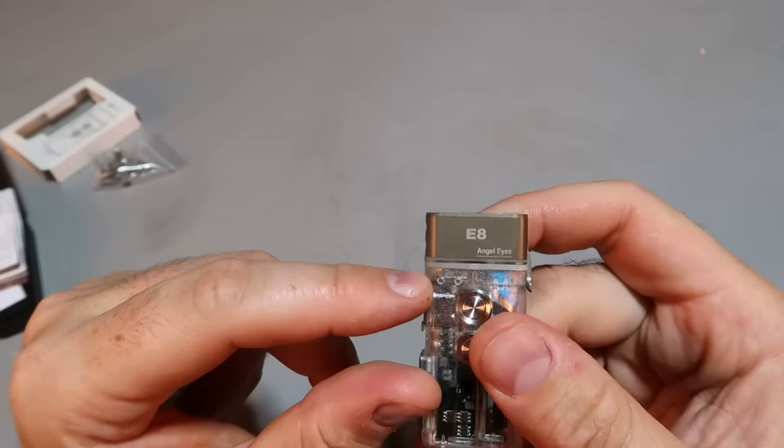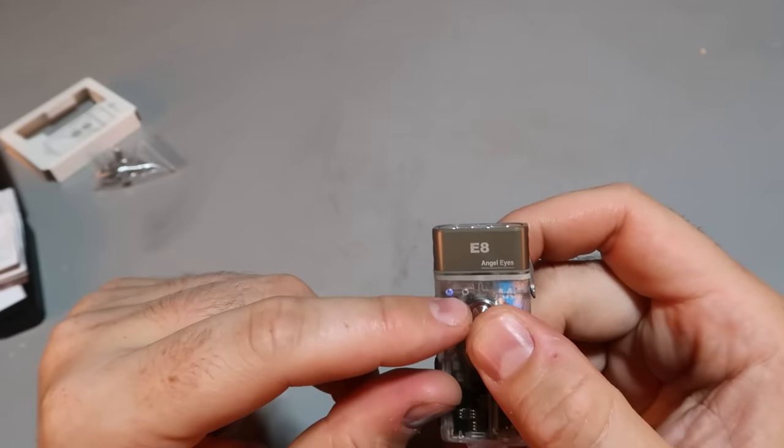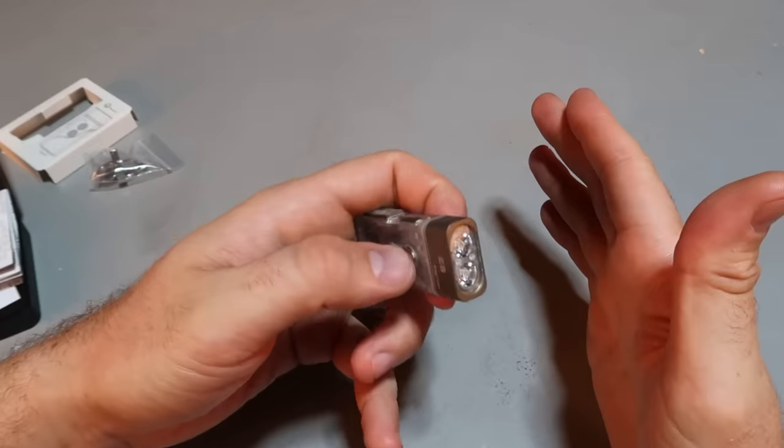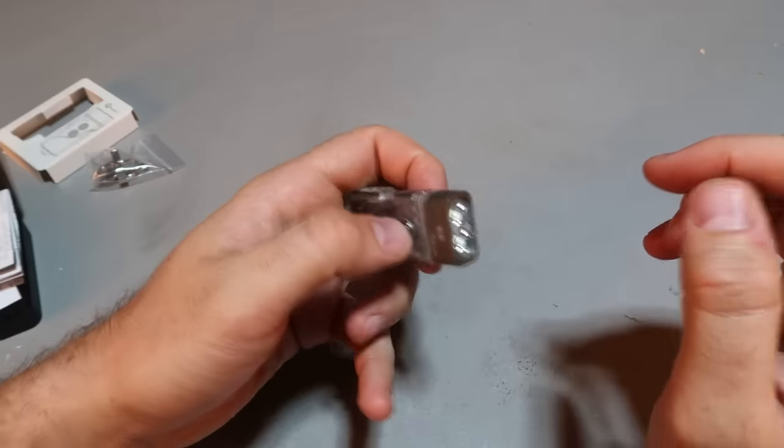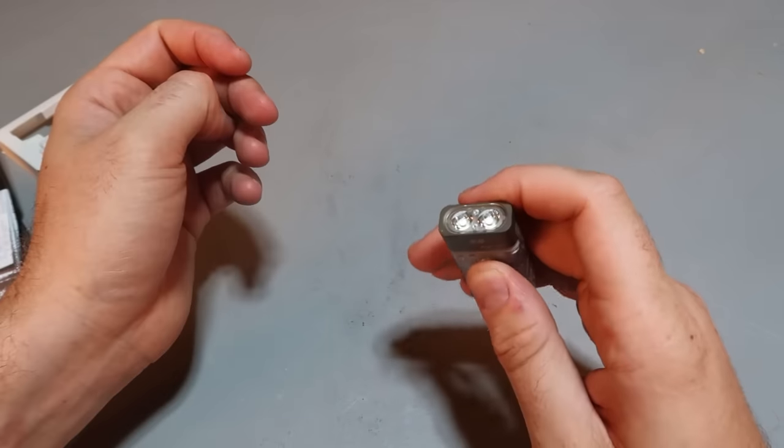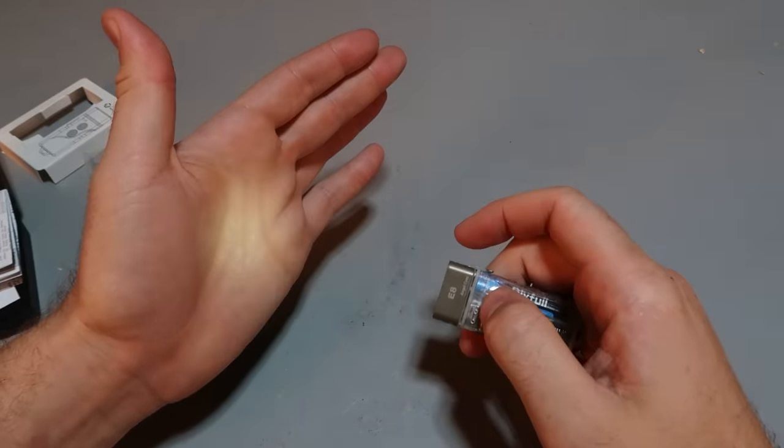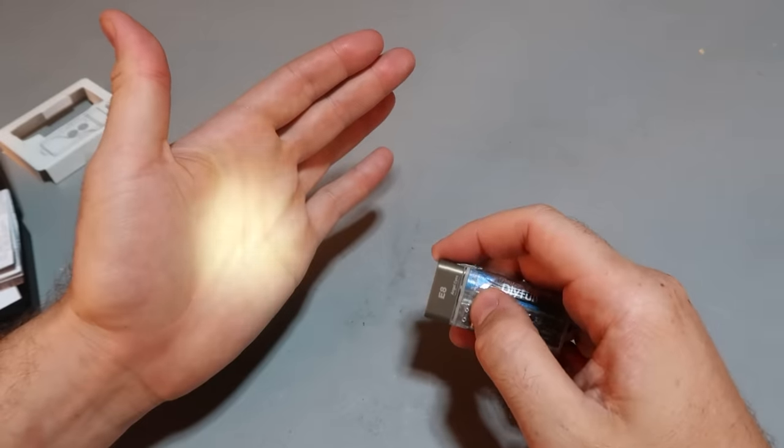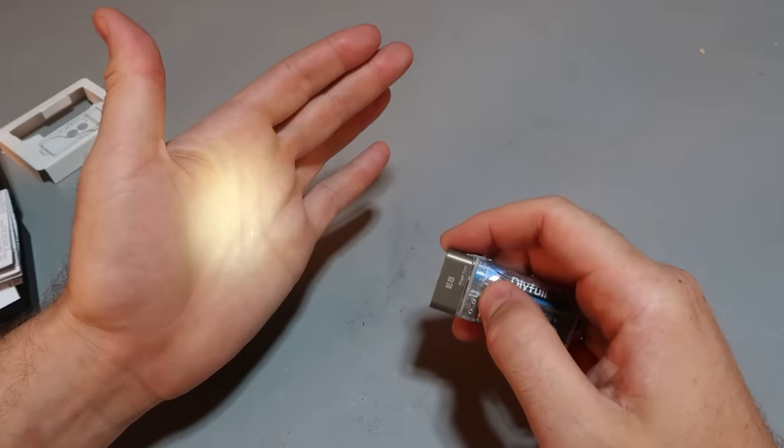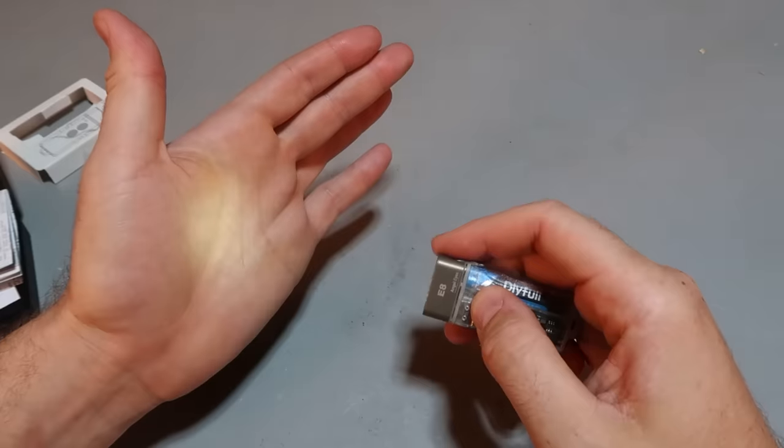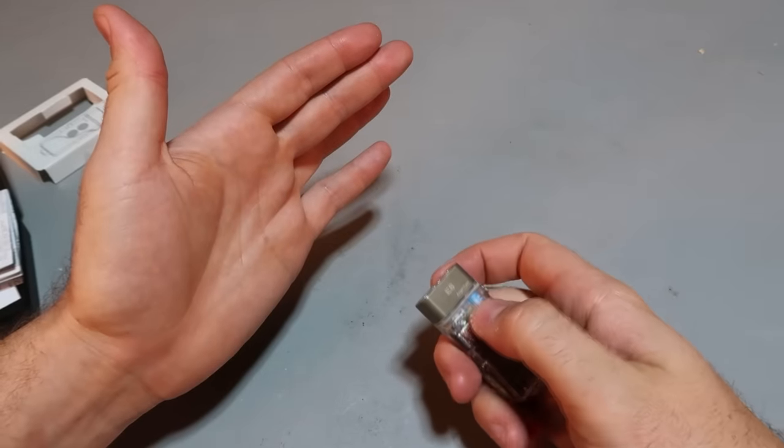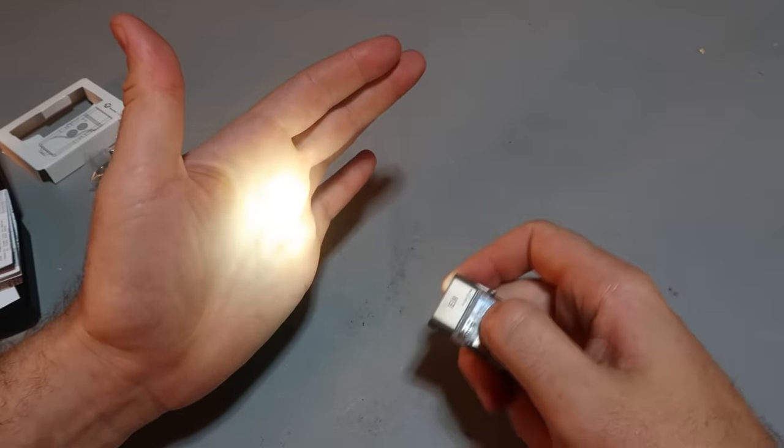This right here on lipo rechargeable batteries and triple A right here. Quick press, we have a little bit of light. Double click, super bright. And then we have different modes. Press and hold to turn it off.